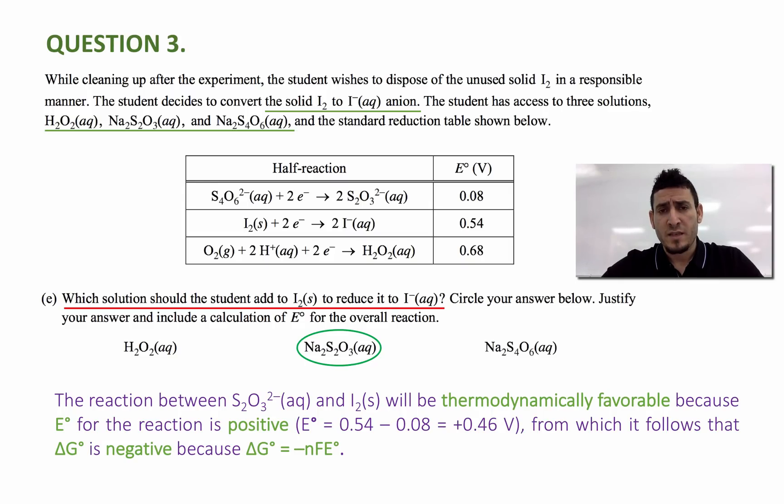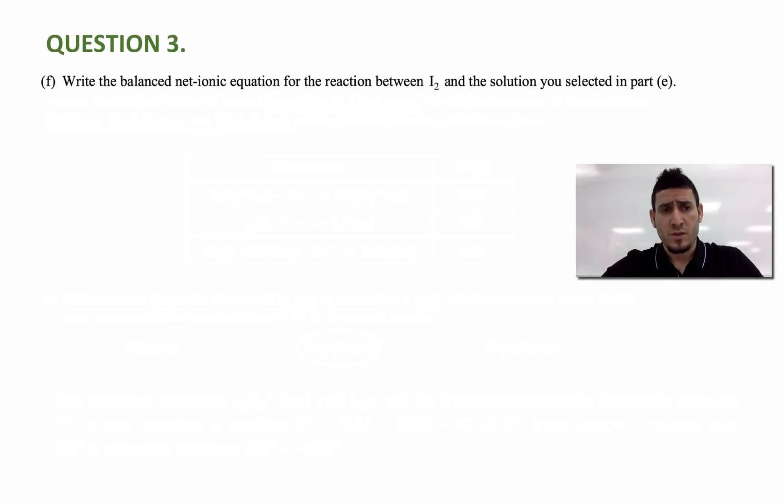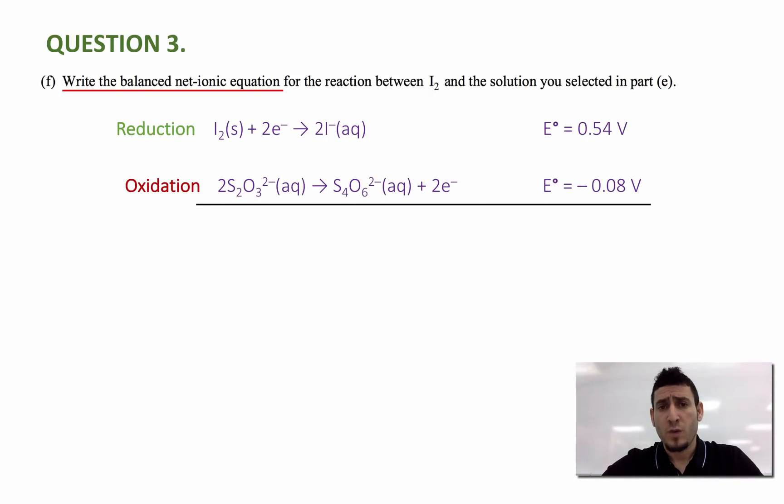Let's move on to the final part of this question. It says, write the balanced net ionic equation for the reaction between I2 and the solution you selected in part E. Thanks to the analysis I did for part E, I can right away write the equation that we are going to get. And that's going to be the I2 solid plus 2S2O3 2 minus aqueous. It gives 2I minus aqueous plus S4O6 2 minus aqueous.